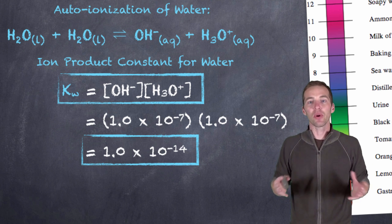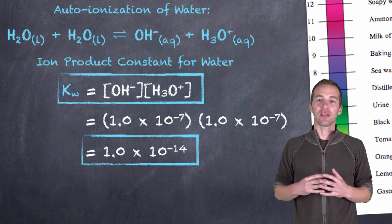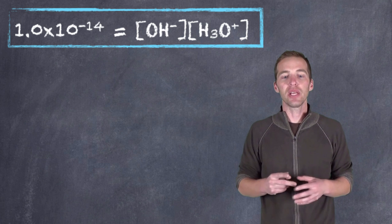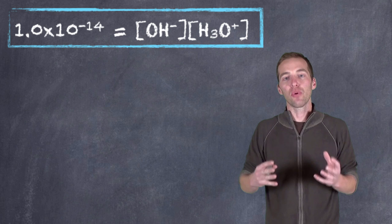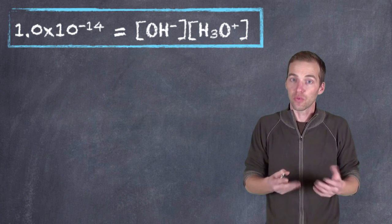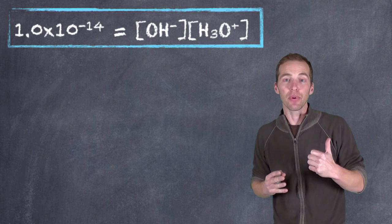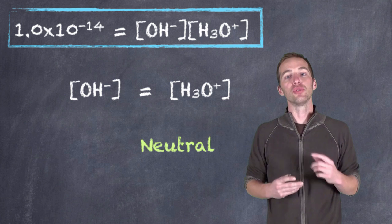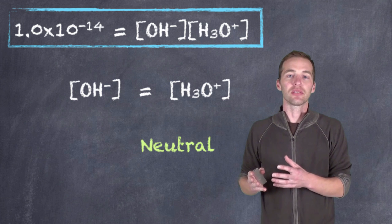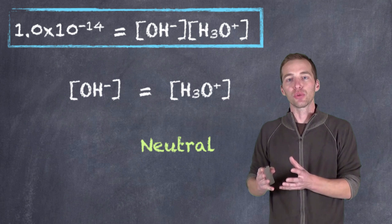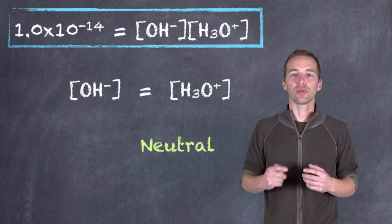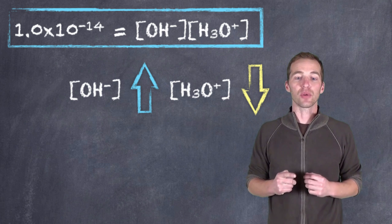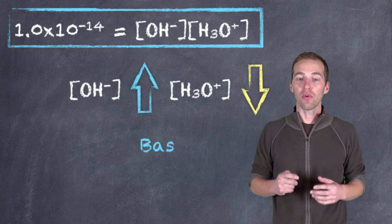Kw always equals 1 times 10 to the negative 14 at 25 degrees Celsius, and it equals the concentration of the hydroxide ion multiplied by the concentration of the hydronium ions. In a water-based solution, if the concentration of the hydroxide ion goes up, the concentration of the hydronium ion must go down, and vice versa. When the two are equal, we have a neutral solution — a neutral solution is defined by equal concentrations of hydroxide and hydronium, not simply by a pH of 7, as that is temperature-dependent.